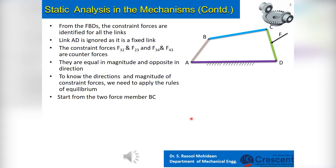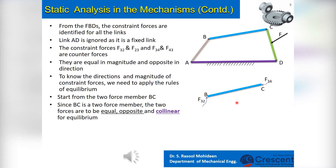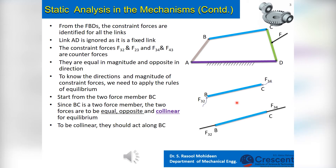Start from the 2-force member BC. Since BC is a 2-force member, the 2 forces are to be equal, opposite, and colinear for equilibrium. To be colinear, they should act along BC. Their sense is not known at present — only the line of action is found, as shown.